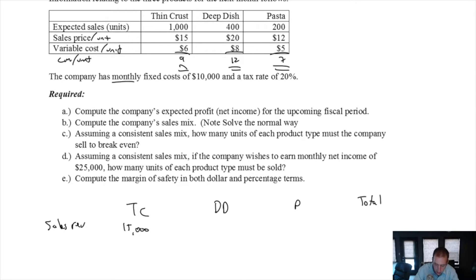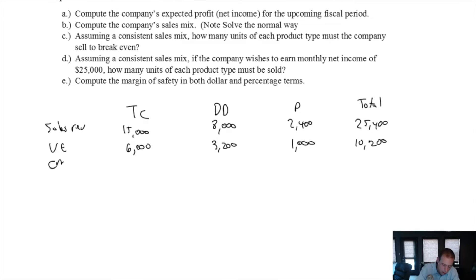Our sales revenue for thin crust is 1,000 times $15, that's $15,000. Our sales revenue for deep dish is 400 times $20, that's $8,000. And 200 times $12, that's $2,400 for the pasta. So that's $25,400 in total. Our variable expenses are $6 a unit for the thin crust, there's 1,000 units, so that's $6,000. For deep dish, $8 times 400 is $3,200. For pasta, $5 times 200 is $1,000.